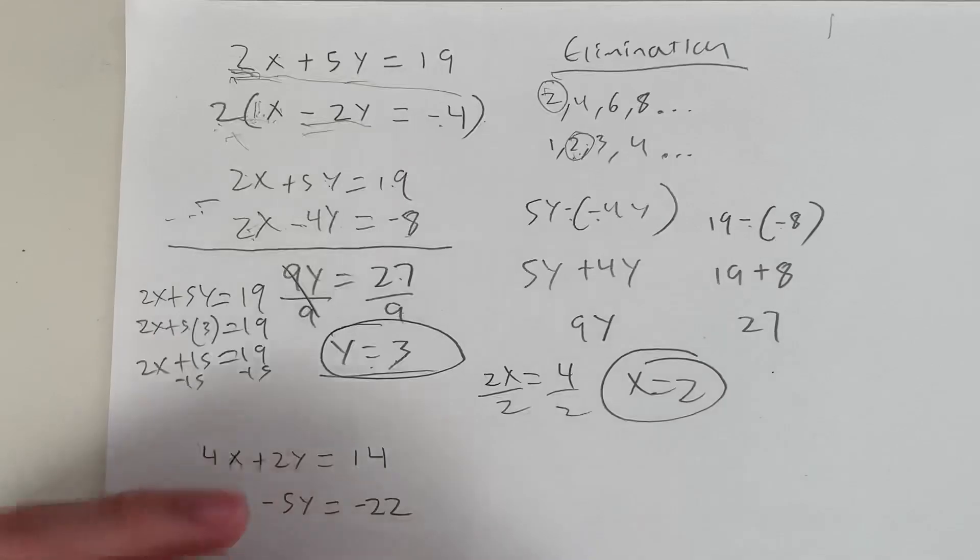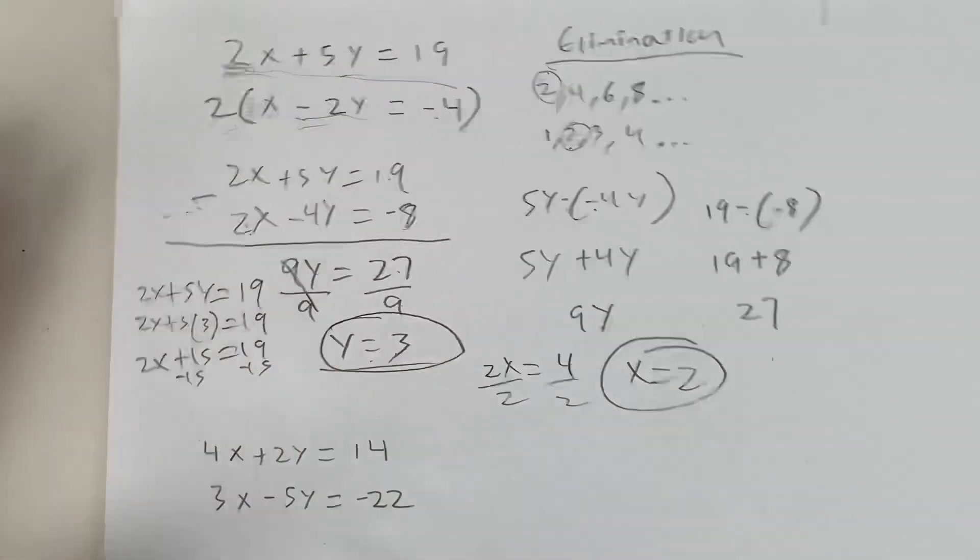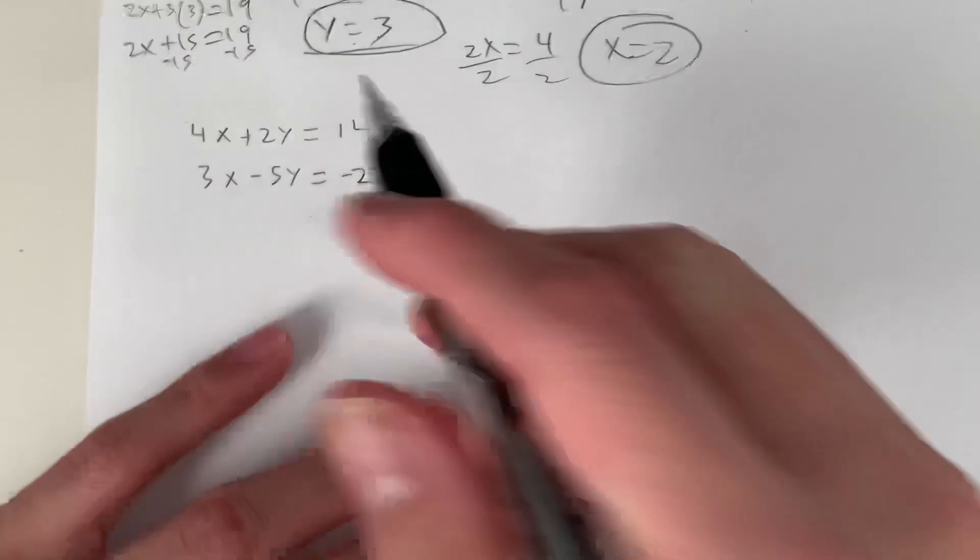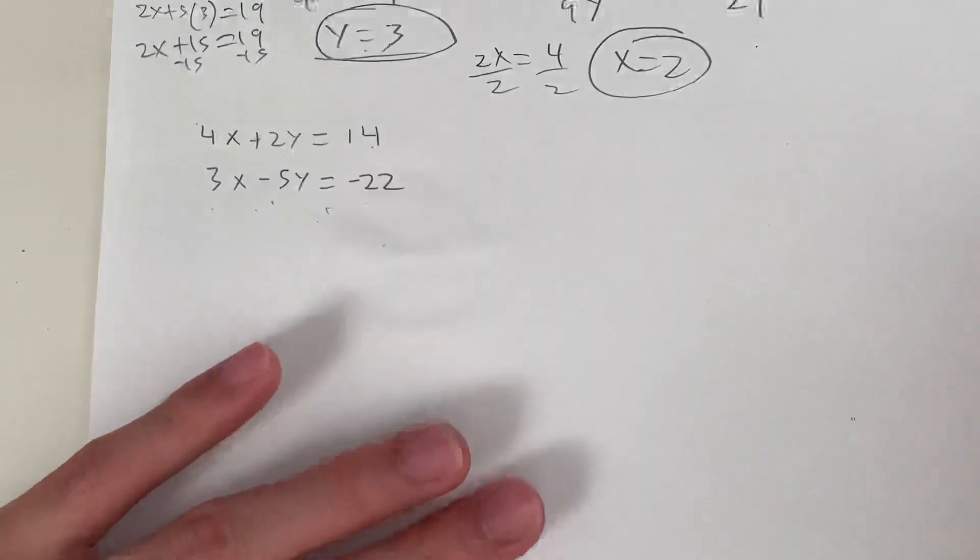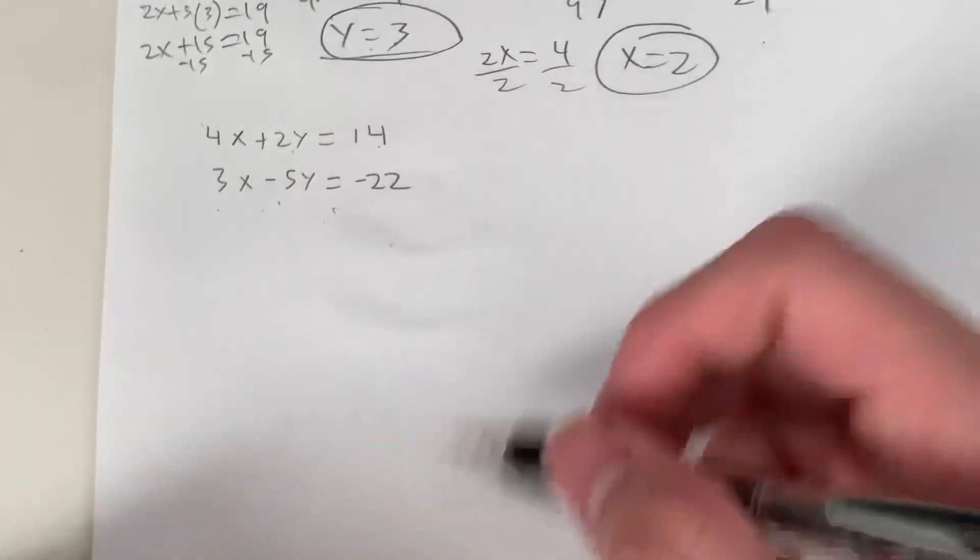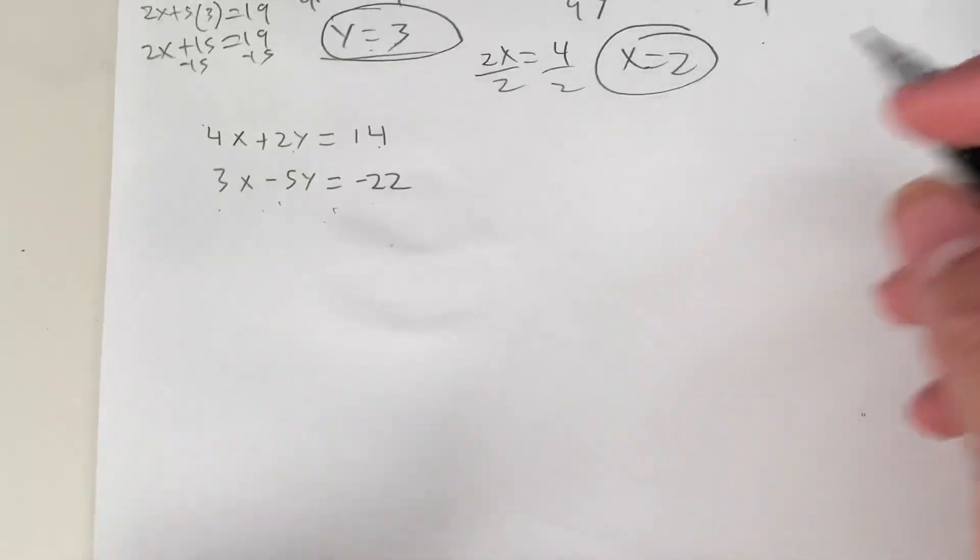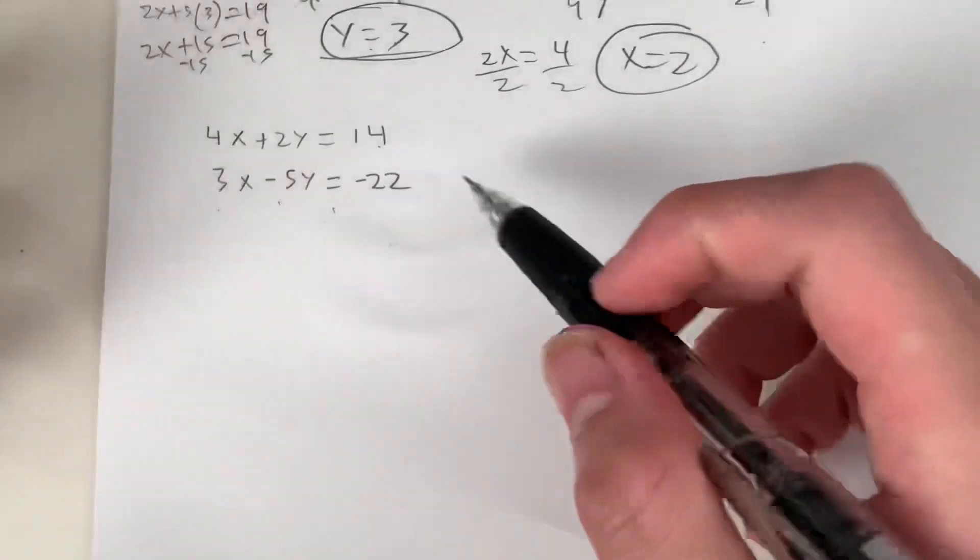So let's try another practice problem. We have 4x plus 2y equals 14, 3x minus 5y equals negative 22. So feel free to work on this by yourself for a few minutes and see if you get a solution. Then you can check with me to see if you did it right.